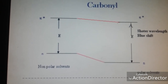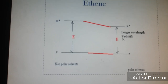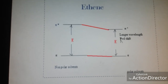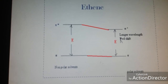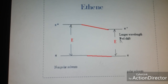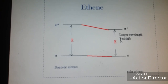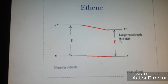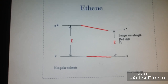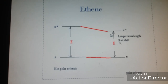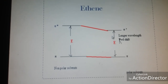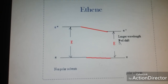Now let us talk about solvent effect on pi to pi star transition — for example in ethene. In the ground state, ethene is stable and does not have electrons available to form bonds with solvent molecules. Only in the excited state does it have electrons and will form bonds with the solvent molecules — hydrogen bonding will be formed in the excited state. As a result, the excited state energy level goes down, reducing the energy gap. A smaller energy gap means longer wavelength — that will be the red shift.